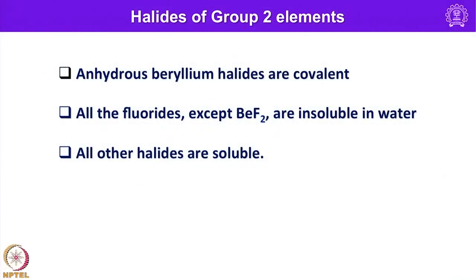Now let me move on to the halides of group 2 elements. When we talk about halides of group 2 elements, anhydrous beryllium halides are always covalent — whether fluorides, chlorides, bromides, or iodides. All fluorides except beryllium fluoride are insoluble in water, and the rest of the halides of group 2 elements are all soluble.